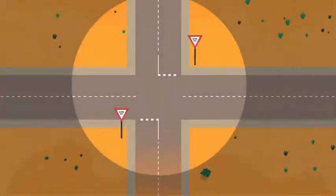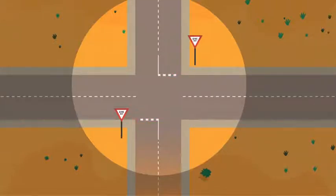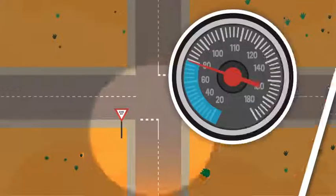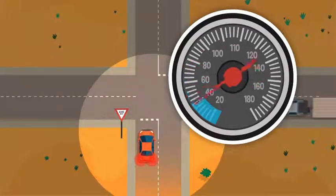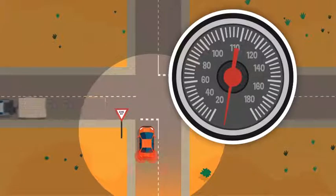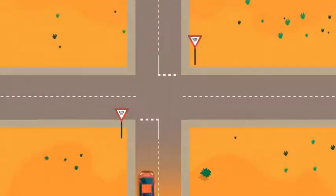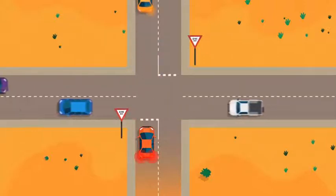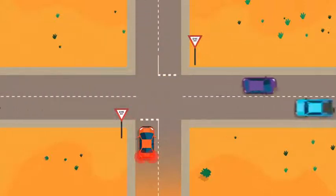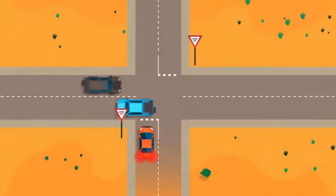Some intersections have give way signs and broken give way lines across the road. These signs and lines tell you which driver should go first through the intersection. When you come close to a give way sign, slow down and get ready to stop. Give way signs are telling you to get ready, maybe stop, and to give way or let another car go first in front of you. Otherwise you might get into an accident and crash into them.